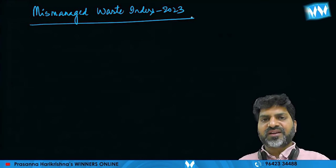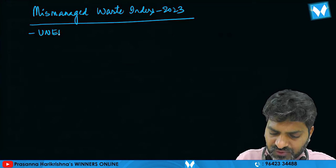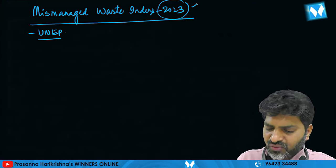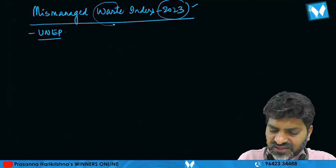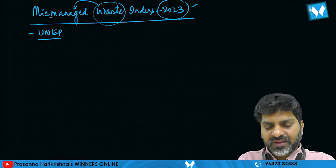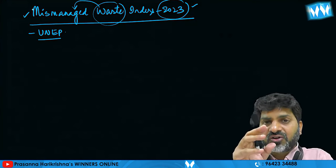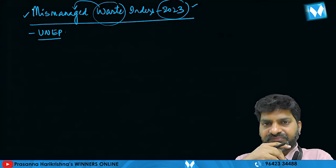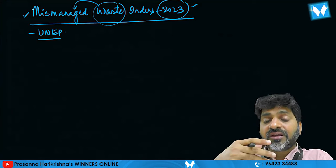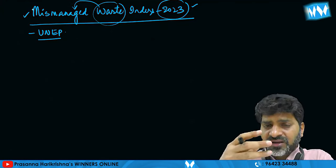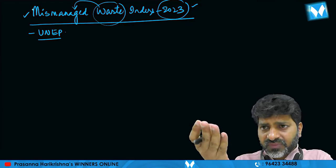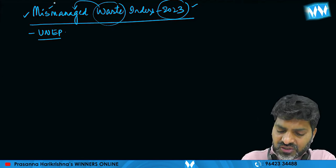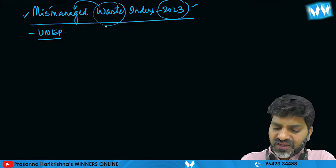Now, the Mismanaged Waste Index 2023 — this was reported by UNEP in 2023. This index tells us which countries mismanage their waste. Mismanaged waste means waste that is not properly managed. Some countries are generating different kinds of recyclers and products. The agriculture sector is also involved.